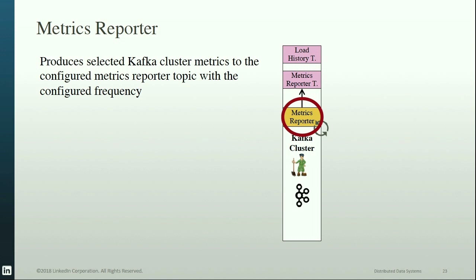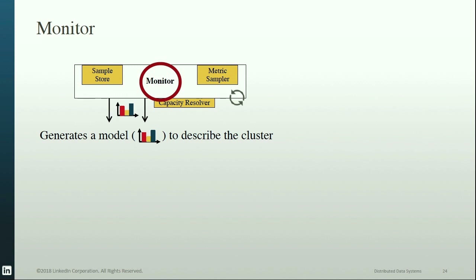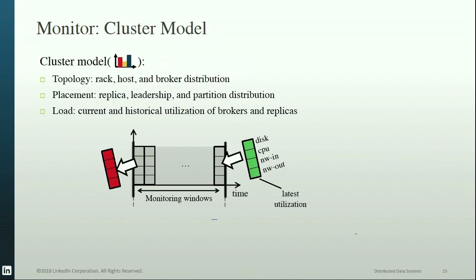The Cruise Control metric reporter runs at each broker and generates metrics such as leader bytes in and out rate, replication bytes in and out rate, and incoming message rate. These metrics are used by the monitor component, whose key responsibility is to generate a cluster model — a representation of the actual cluster showing topology information about racks, hosts, and brokers; placement information about replicas, leaderships, and partitions; and current and historical load information. Users can customize the retention and validity requirements of monitoring windows via configurations like number of windows, sampling frequency, and window length.